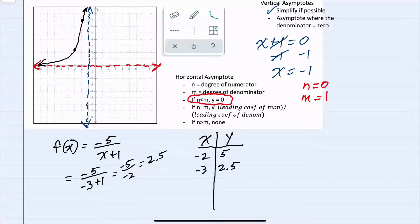And then I can move to the right-hand side of that vertical asymptote. So x equals 0 is going to be on the right-hand side. Substituting in the 0 for x gives me a negative 5 over 1, or negative 5. So 0, negative 5 would be here.